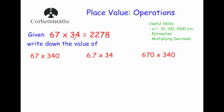So here we've got 67 times 34 equals 2278. The first one we've been asked to calculate is 67 times 340. The 67 stayed the same, but the 34 has become 10 times bigger to become 340. Now if you make one number in a multiplication 10 times bigger, the answer will become 10 times bigger. So our answer will be 22,780.